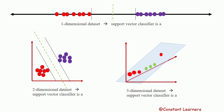Let's understand support vector machines in multi-dimensional data sets. In one-dimensional data, the support vector classifier or decision boundary is a point. These are the support vectors — the data points closest to the opposite class. In two-dimensional data, we have an x-axis and y-axis, and the support vector classifier is a line. We have drawn the hyperplane exactly in between the two classes, with M1 equal to M2.